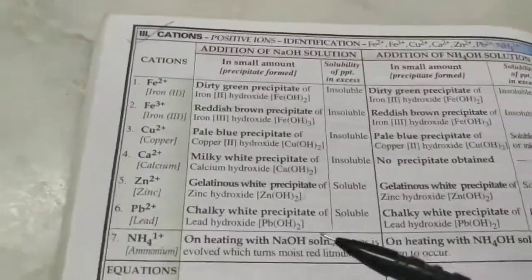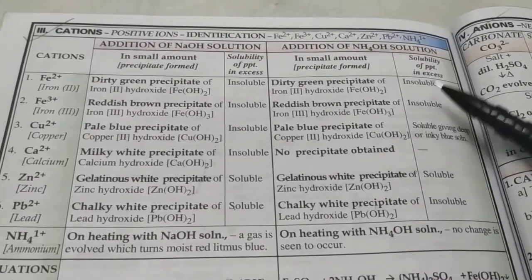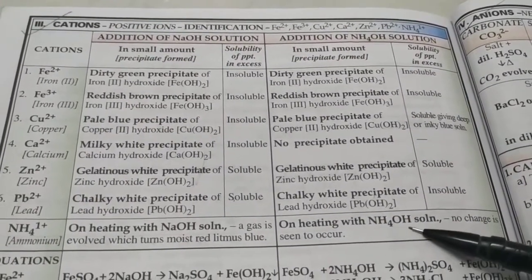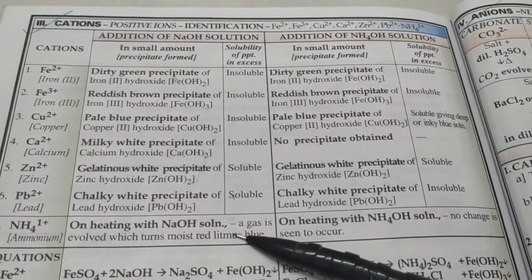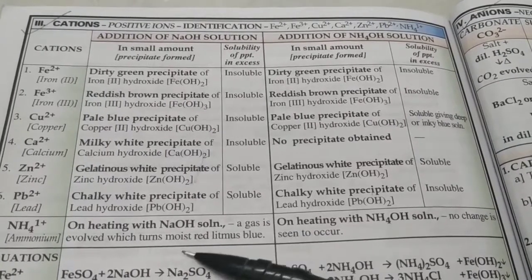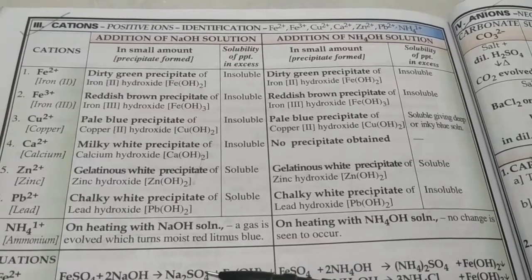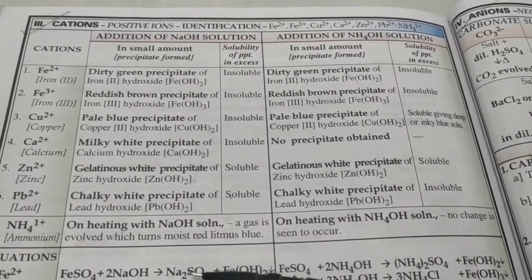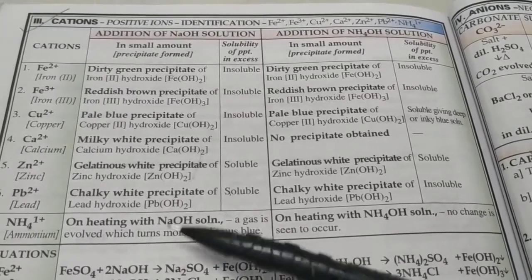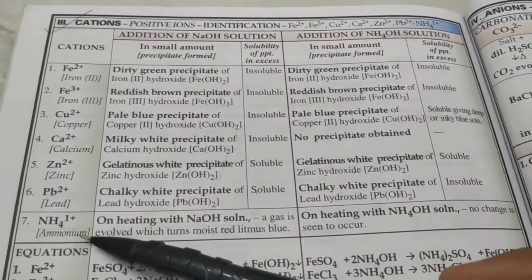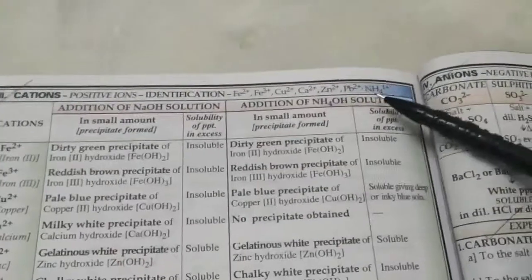For ammonium salts, reacting with ammonium hydroxide itself gives no observation. Instead, react with sodium hydroxide and heat — this releases a gas that turns moist litmus paper blue and turns Nessler's reagent brown. That gas is ammonia, proving the salt is indeed an ammonium salt.